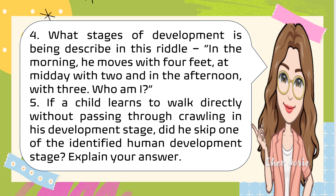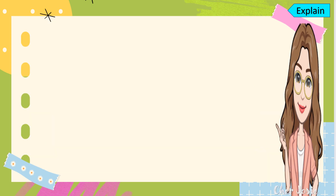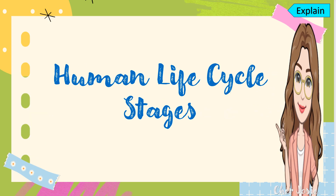For number 5: if a child learns to walk directly without passing through crawling in his development stage, did he skip one of the identified human development stages? Let's study further the human life cycle stages.